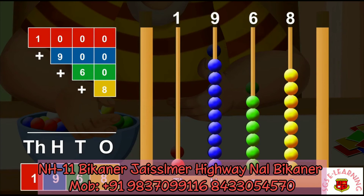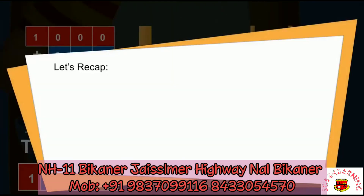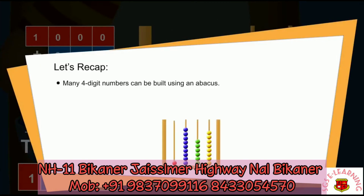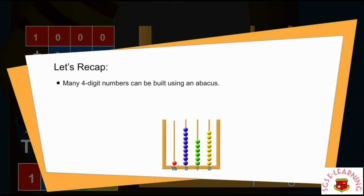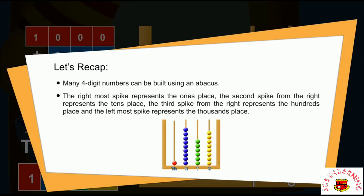In a similar way, we can build many four-digit numbers on an abacus. Let's recap: many four-digit numbers can be built using an abacus. The rightmost spike represents the ones place, the second spike from the right represents the tens place, the third spike from the right represents the hundreds place, and the leftmost spike represents the thousands place.